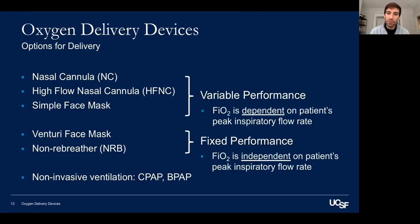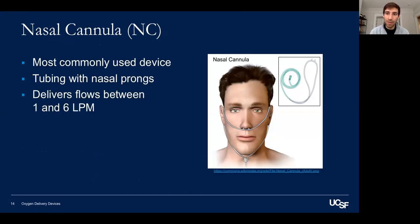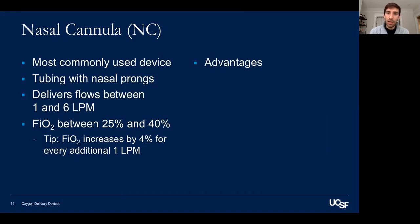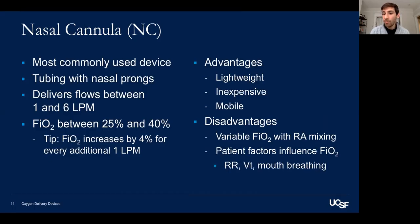Variable performance means the FiO2 delivered depends on the patient's peak inspiratory flow rate. Fixed performance means you can deliver a set FiO2 regardless of the patient's flow. Nasal cannula is the most commonly used device — simple tubing with nasal prongs delivering flow between 1 and 6 liters per minute. FiO2 varies between 25 and 40%; a useful tip is that every additional 1 L/min gives approximately 4% extra FiO2. It's lightweight, inexpensive, and mobile, but has variable FiO2 due to room air mixing, mouth breathing, and variable respiratory rate and tidal volume.